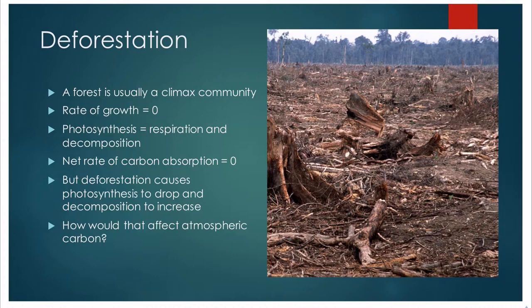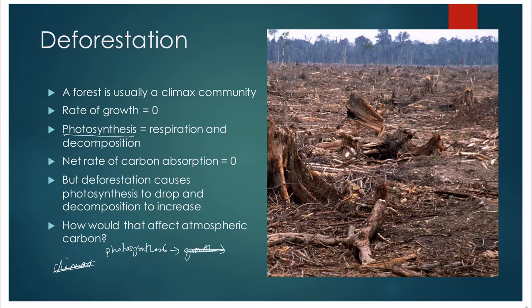The problem is this: when you cut down a forest, it's not that you're simply losing the photosynthesis. In a climax community, photosynthesis gives you increasing biomass — so as a tree is growing, its biomass is increasing. And as its biomass is increasing, we are overall consuming CO2; CO2 is being incorporated into the biomass of the plant and therefore being removed from the atmosphere.